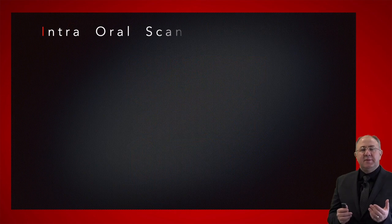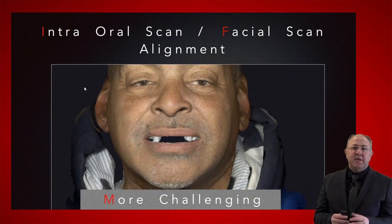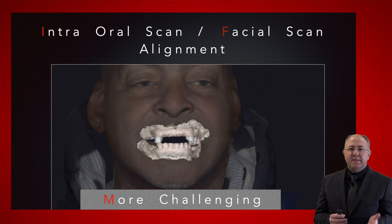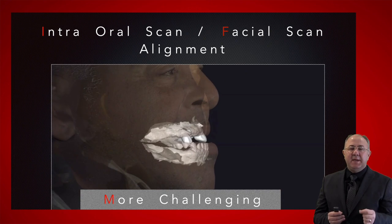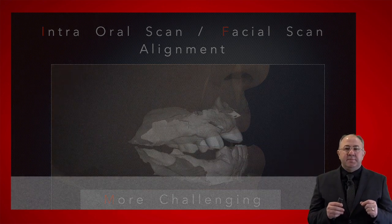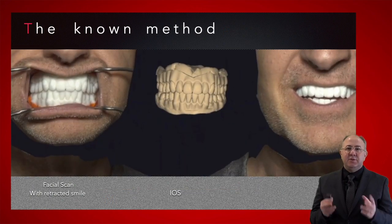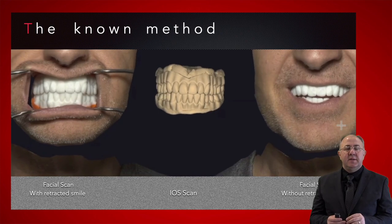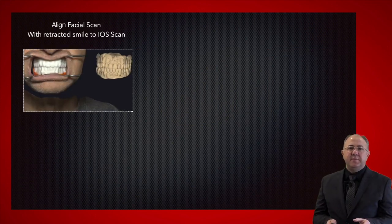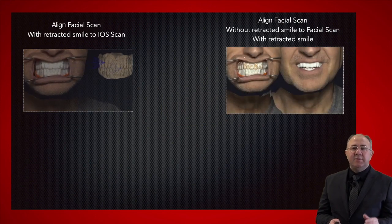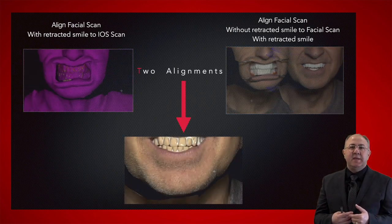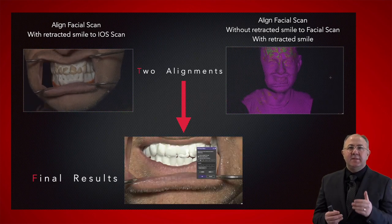But when it comes to aligning a facial scan to an intraoral scan, it's more challenging, because all facial scanners today lack the capability of scanning teeth — it's not possible for them to see behind lips. The known method today is to take two facial scans: one with a retracted smile and one without. You start by aligning the retracted smile scan to the intraoral scan, then align the natural smile scan to the retracted one, resulting in three scans aligned together.